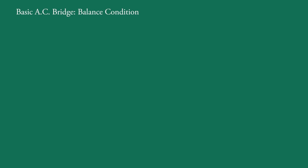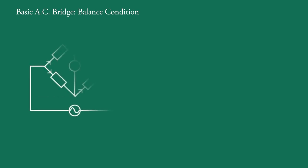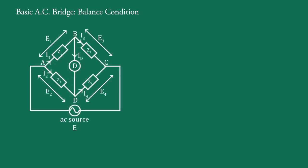In this video we will derive the bridge balance condition for a basic AC bridge. This is the circuit diagram for a basic AC bridge. A, B, C and D are the four nodes of the bridge, and AB, AD, CB and CD are the four arms of the bridge.